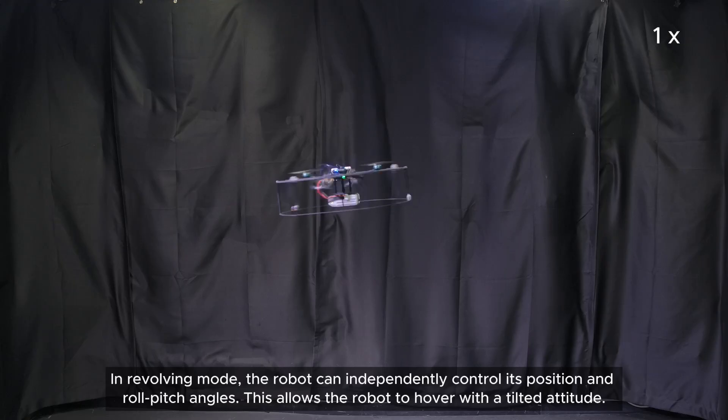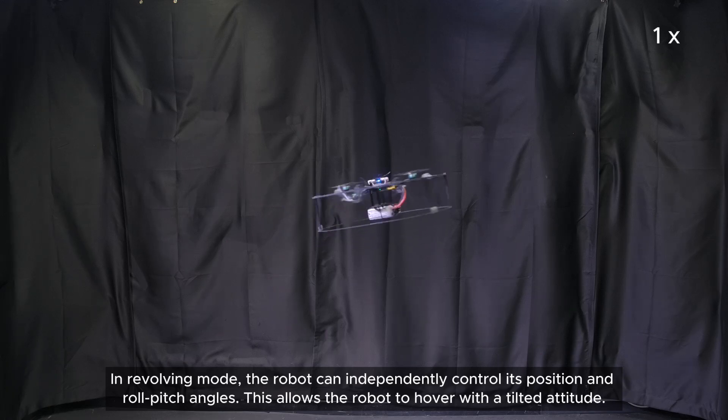In revolving mode, the robot can independently control its position and roll pitch angles. This allows the robot to hover with a tilted attitude.